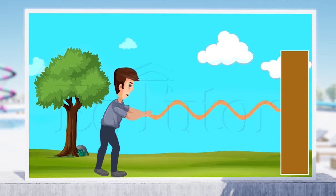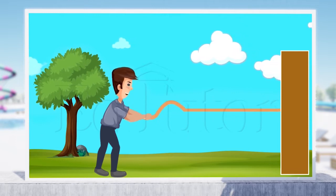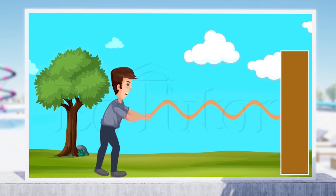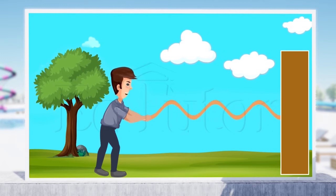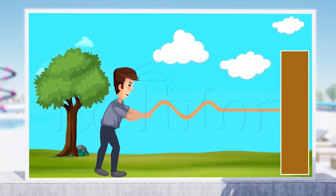If we shake the string faster, we give off more energy per second, which produces a wave of higher frequency. And the wave delivers more energy per second to the particles of the string as it moves forward.